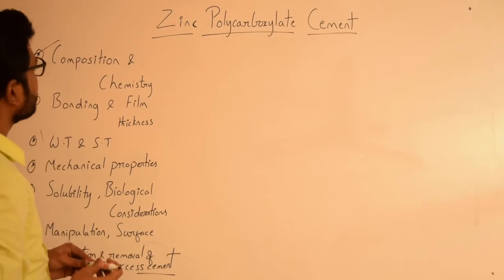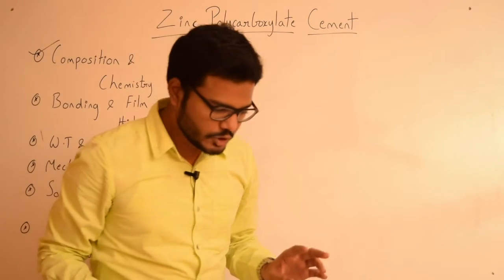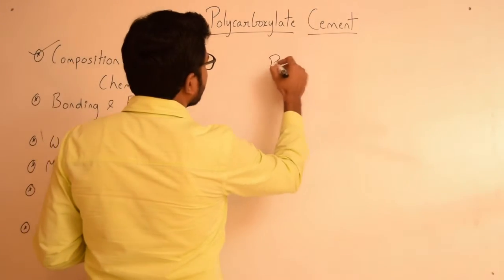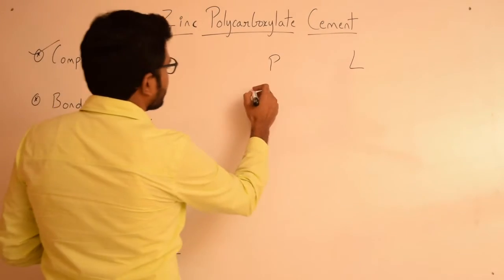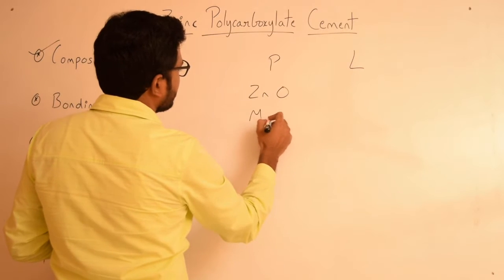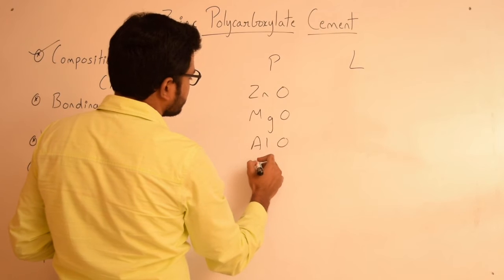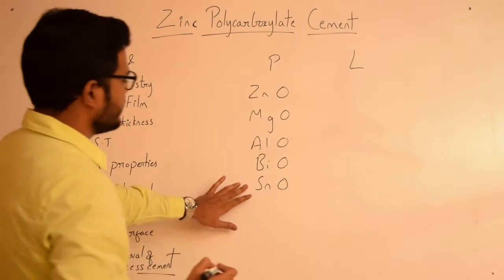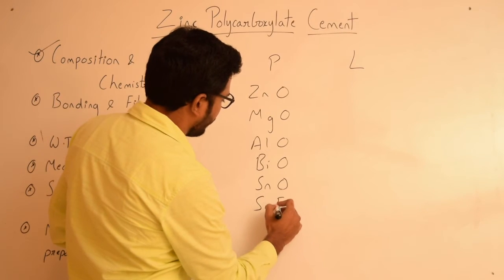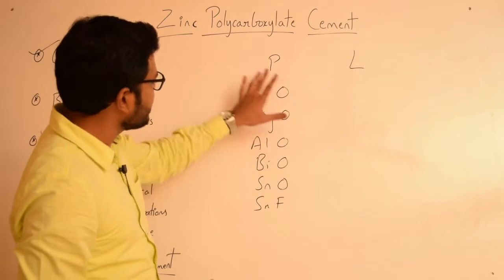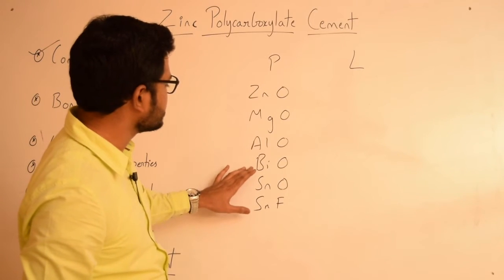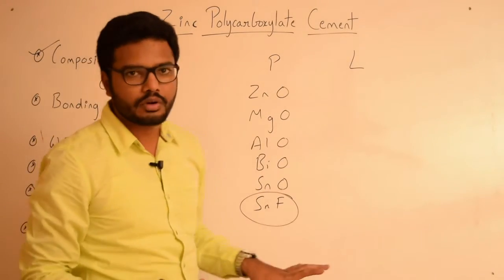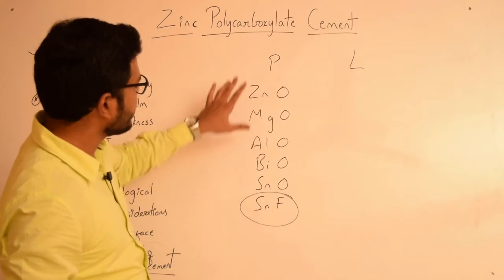Zinc polycarboxylate cement is available in powder and liquid forms. The powder chiefly contains zinc oxide, magnesium oxide, aluminium oxide, bismuth oxide, and stannous oxide. Apart from these, it also contains stannous fluoride. So the powder basically contains various oxides of zinc, magnesium, aluminium, bismuth, and tin, and also stannous fluoride.